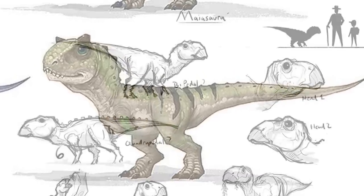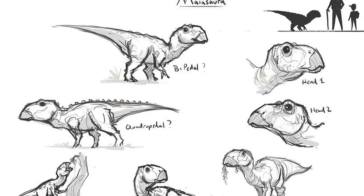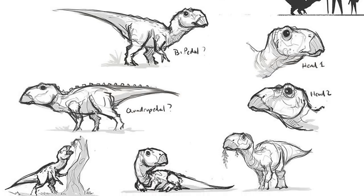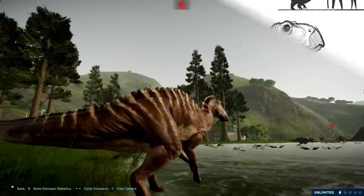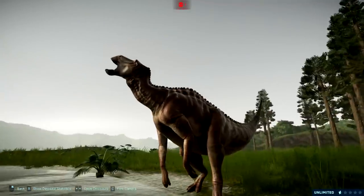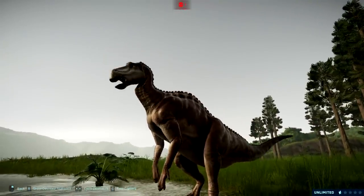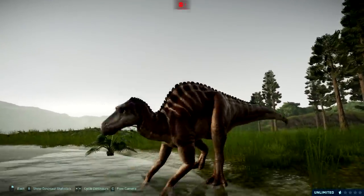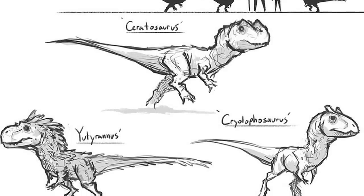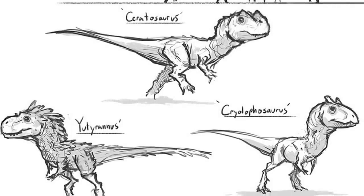Anyways guys, I'd love to hear all of your thoughts on this stuff. What do you think about this early concept art for Camp Cretaceous? And how different do you think the show would have been if Bumpy was a Maiasaura instead of an Ankylosaurus? Whatever your own thoughts and opinions happen to be, I'd love to hear them in the comments down below.